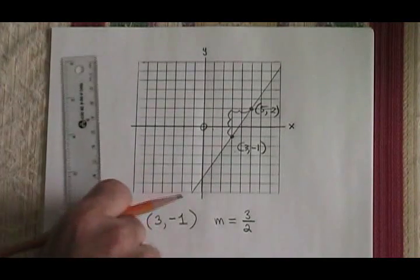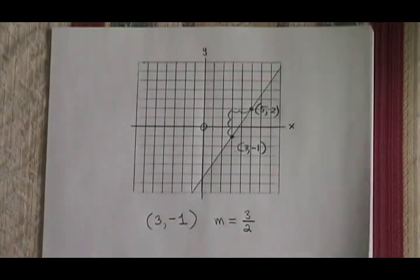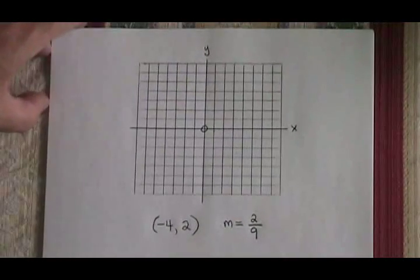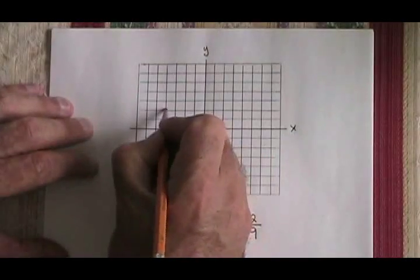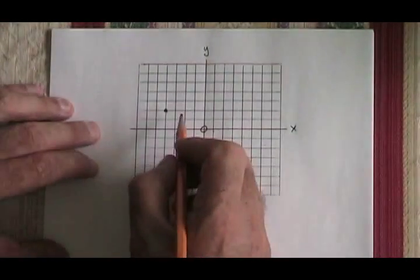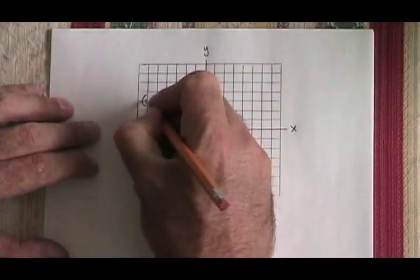Let's do a few more examples though, to make sure that we're used to how to do this. In this example, my starting point is negative 4, 2. So I graph that and I identify it.